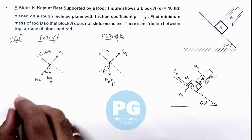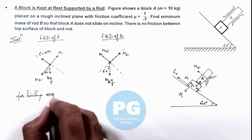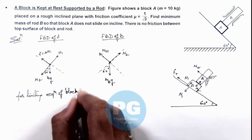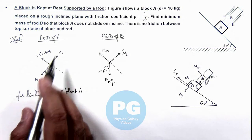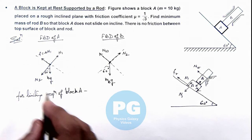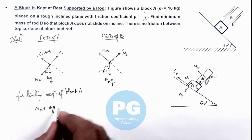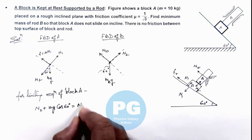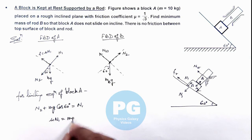For the limiting equilibrium of block A, balancing all forces along the incline plane and normal to the incline plane: normal to incline gives N2 plus mg cos60° equals N1. Along the incline we write mu times N1 equals mg sin60°.